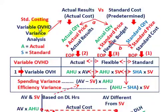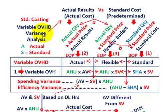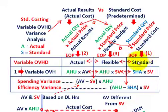What we're going to be going over here is variable overhead variance analysis, and we're going to be doing it in terms of standard costing. We're going to be doing this variance analysis looking at it in terms of a graph. When we're talking about variance analysis, we've got three different amounts that we have to deal with, and we're going to have to establish some standard amount.